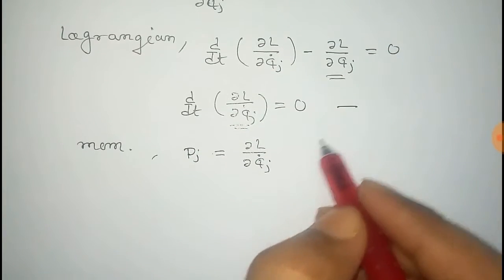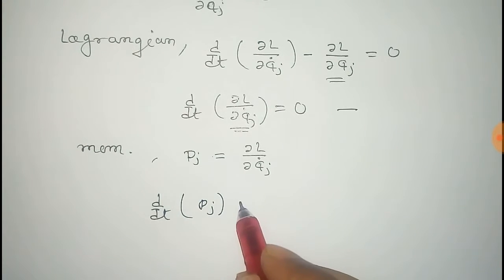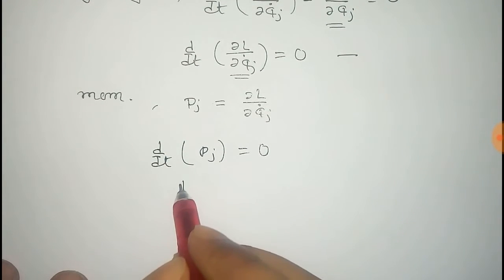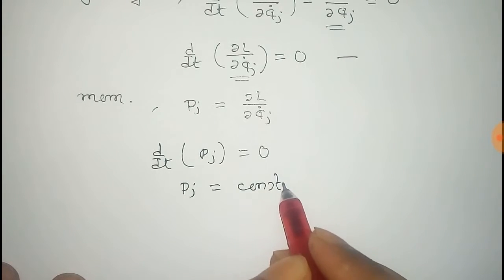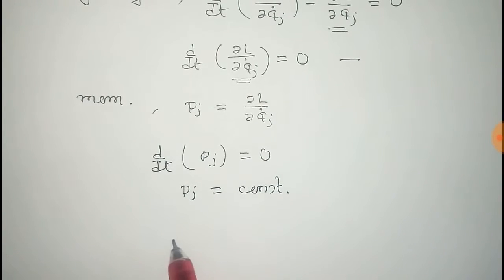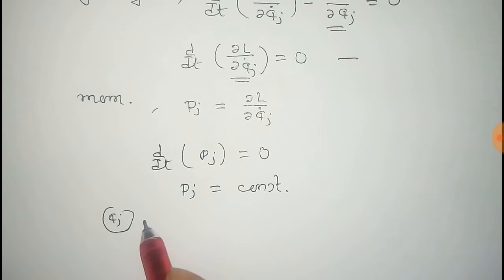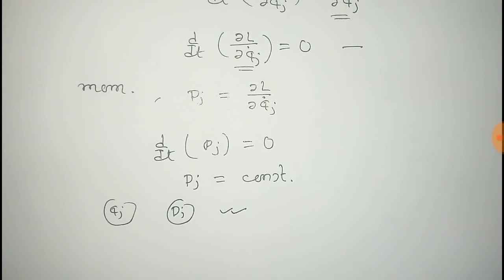From this we get d dt of pj equals zero, and from this pj equals constant. And from this we can see that for cyclic coordinate qj, its corresponding momentum pj is conserved. Thus we prove the condition.